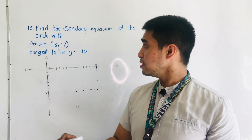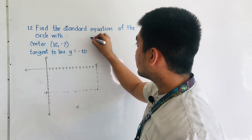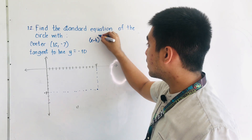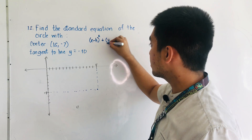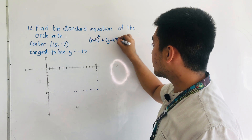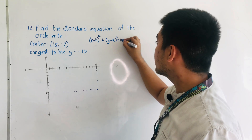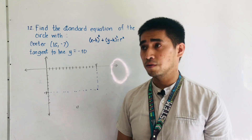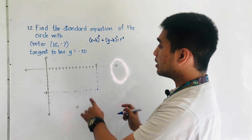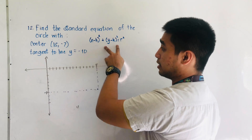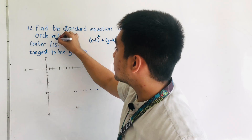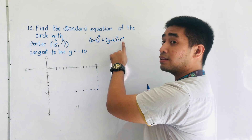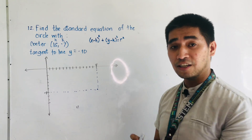Using the standard equation of the circle, the standard equation or the center-radius form is: x minus h, quantity squared, plus y minus k, quantity squared, is equal to r squared. So this is our standard equation. We are given the center as h and k, but we do not know yet the value of the radius.